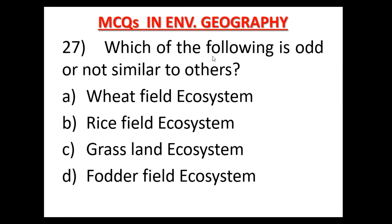Question number 27: Which of the following is odd or not similar to the others? निम्न में से कौन एक समान नहीं है — Wheat field ecosystem, Rice field ecosystem, Grassland ecosystem, Fodder field ecosystem? Grassland ecosystem is the odd one out, as it is a natural ecosystem while the others are agricultural or artificial ecosystems. Option C — Grassland ecosystem is the correct answer.